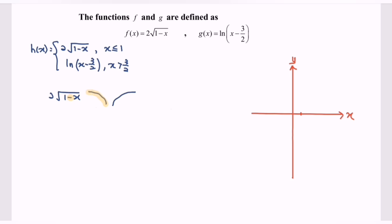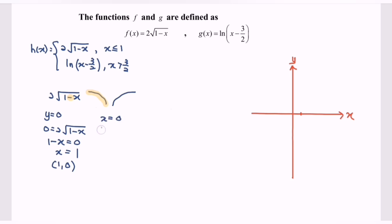Next, we find the x-intercept by setting y equal to 0: 0 equals 2 multiplied with the square root of 1 minus x, so 1 minus x equals 0, meaning x equals 1. The x-intercept is (1, 0). Next, for the y-intercept, when x equals 0, y equals 2 times the square root of 1, so y equals 2. The y-intercept is (0, 2).